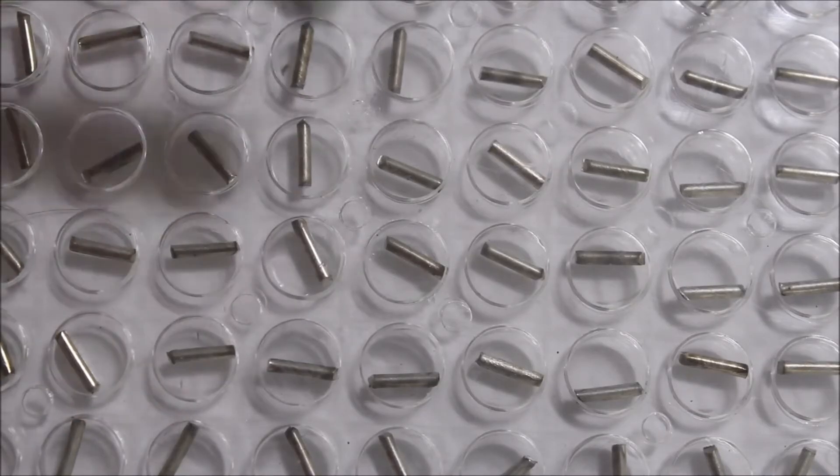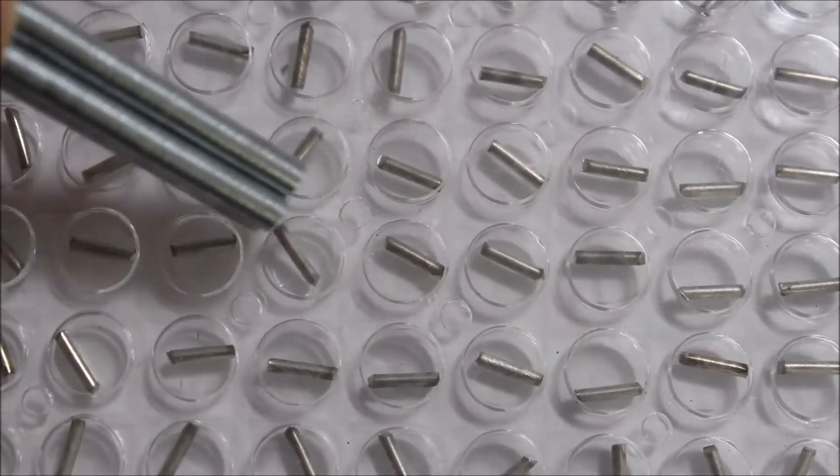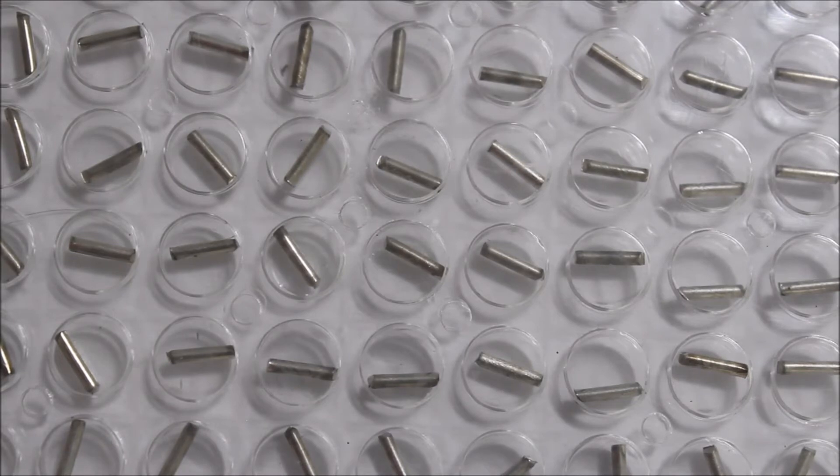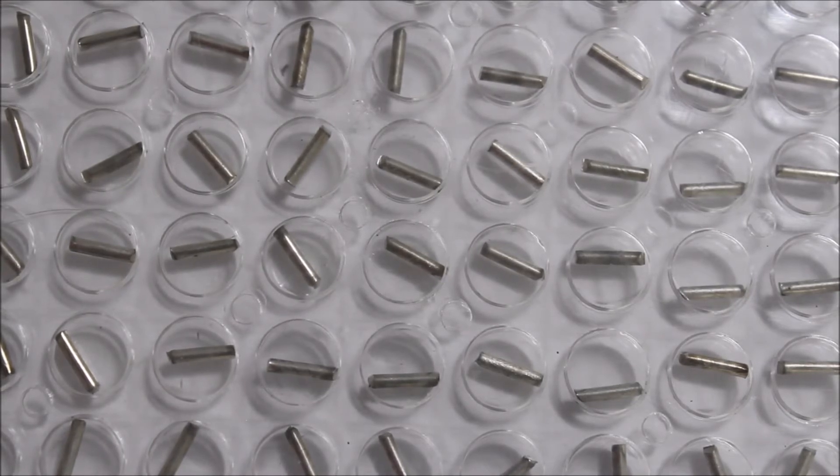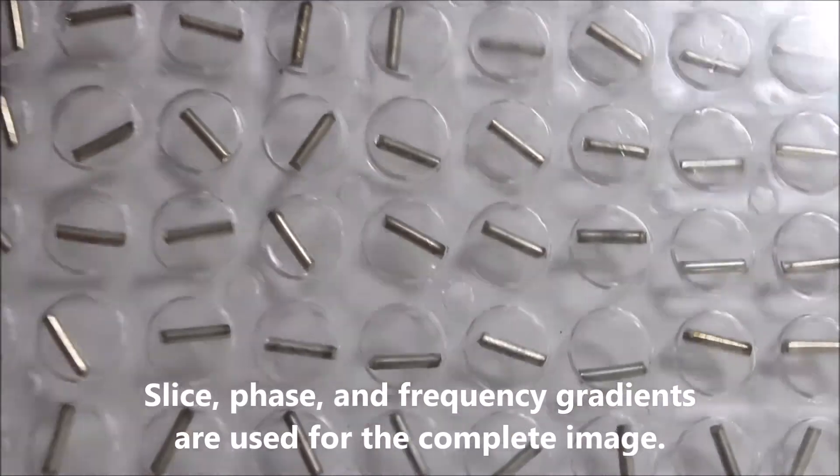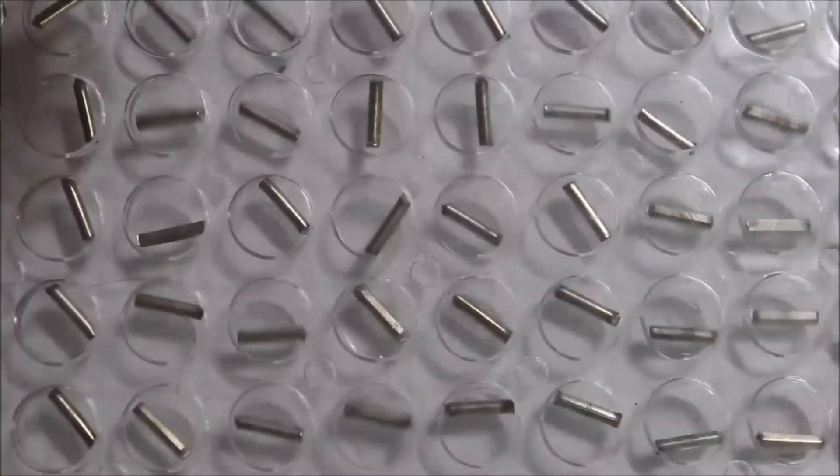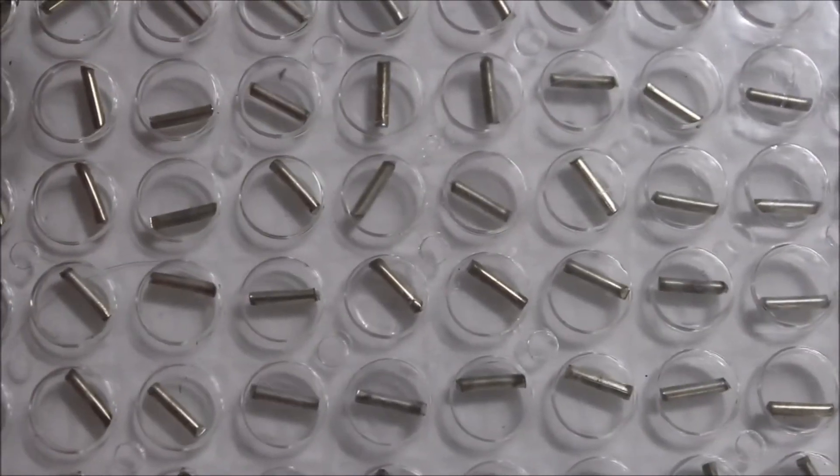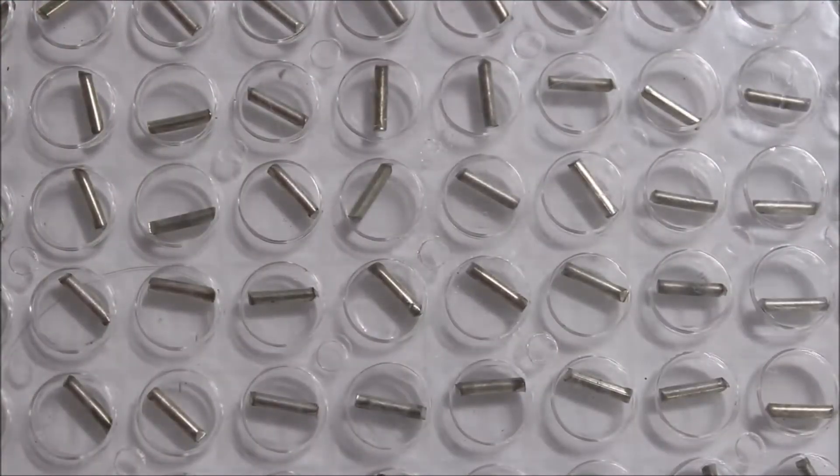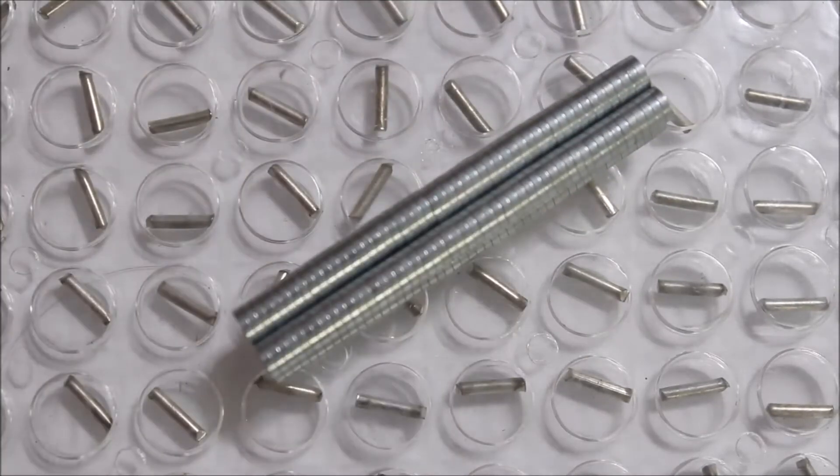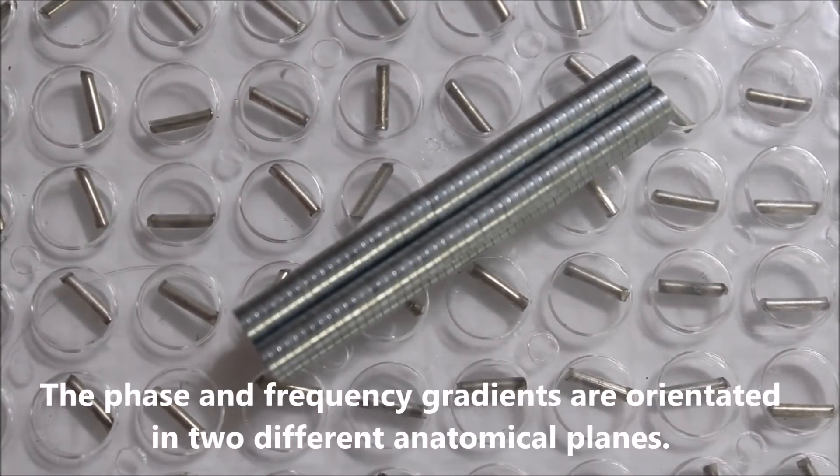We only did that, we get one data point for the whole image. We can't separate everything out. We need to add gradients. So we have a slice select gradient, so that is mimicking that we are taking images from this one discrete slice. So we turn on a slice gradient and that energizes this one slice of tissue.